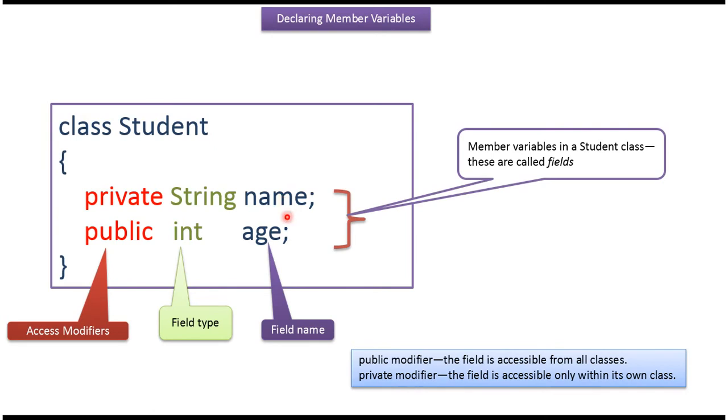These are also called fields. Private String name - here, private is the access modifier, String is the field type or data type, and name is the field name. Public is the access modifier, int is the data type, and age is the member variable or field.